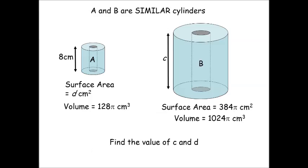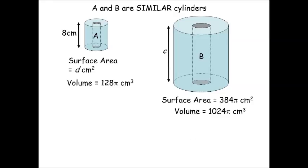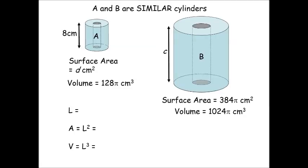Now, lastly, here's a more typical exam question. You're given two similar shapes and a couple of measurements from each and are told to work out a couple of other measurements. Looking through the information we've been given, we have the volume, in terms of π, for each, so we can use that to work out the volume scale factor. 1024π divided by 128π gives a scale factor of times 8, so we can fill that in on the LAV.